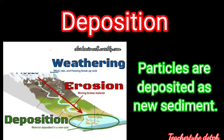After erosion, deposition follows. Here, particles are deposited as new sediment, and this sometimes occurs in a body of water. The image shows three processes: weathering — the breaking down of rocks; erosion — the transport of broken rocks to another location; and deposition — settling to the bottom of water.